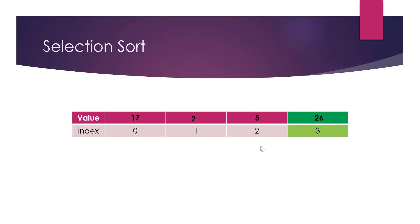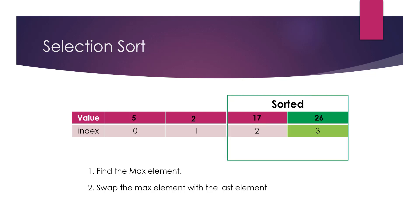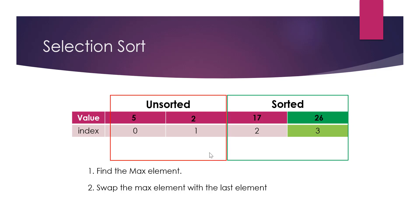We only look at the unsorted part of the array. The maximum element in this part is at location 0, which is the value 17. We swap that maximum element with the last element of the unsorted array, which is at index 2. Now 17 and 26 are in their correct locations in the sorted portion.